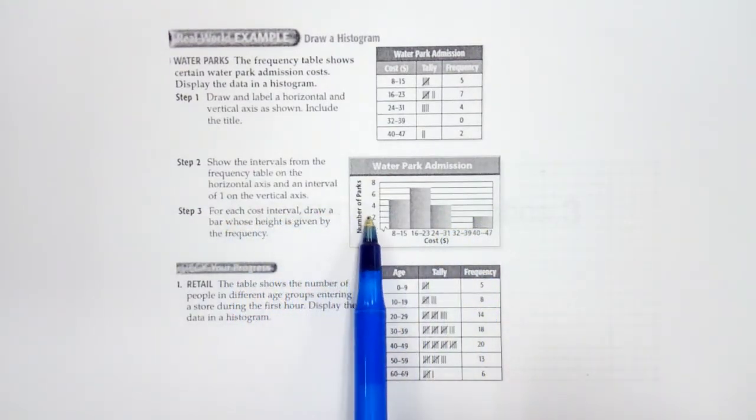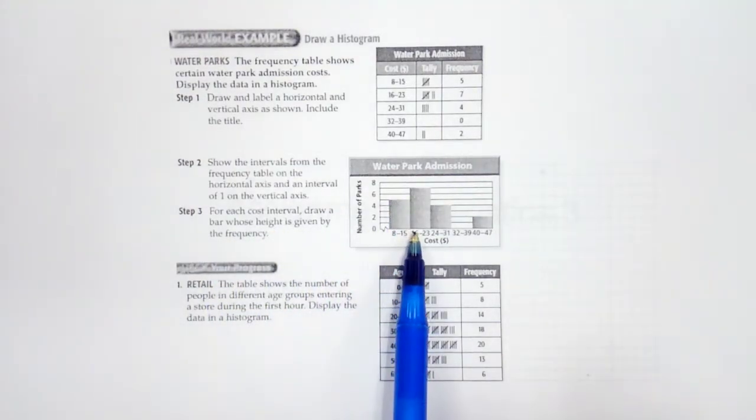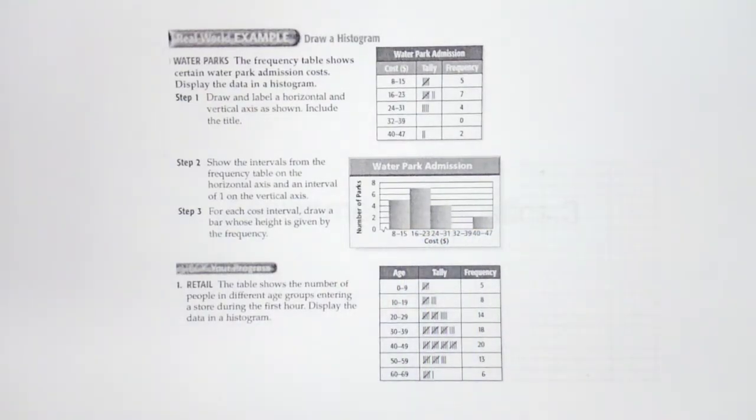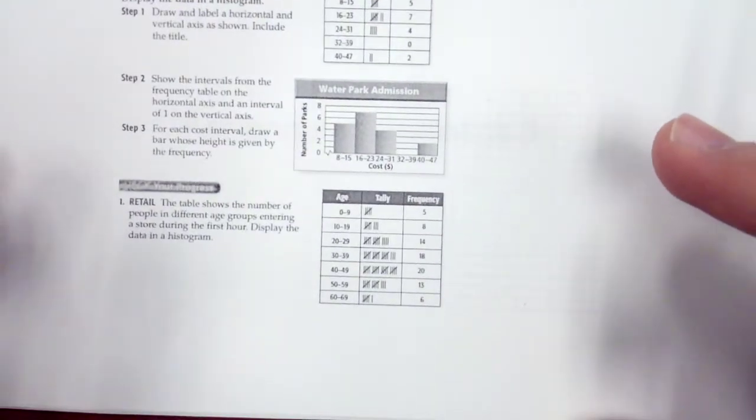Okay, for each cost interval, draw a bar whose height is given by the frequency. So our frequency is given by how many we have. Okay, now it's time to do one on our own.